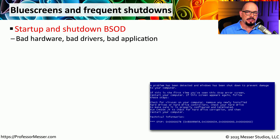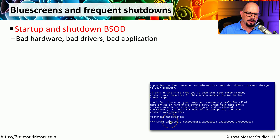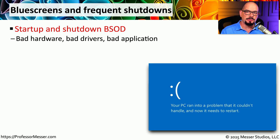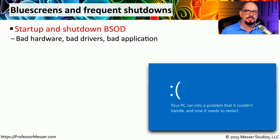In previous Windows versions, you got a very detailed set of information provided on the Windows blue screen of death. On newer versions of Windows, we get a prettier stop screen. But the issue is still the same — our operating system stops completely, and we have to reboot our system to get back up and running.